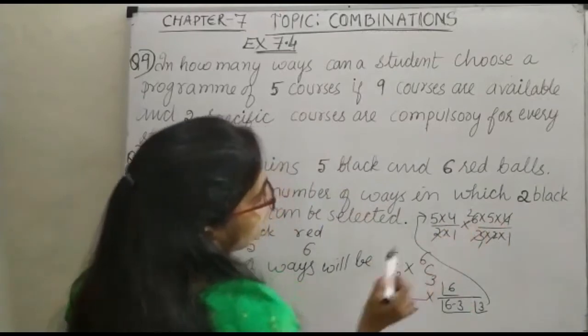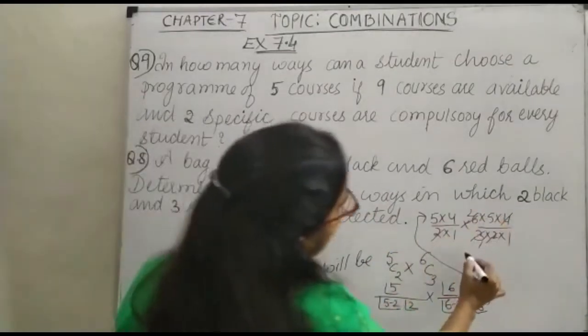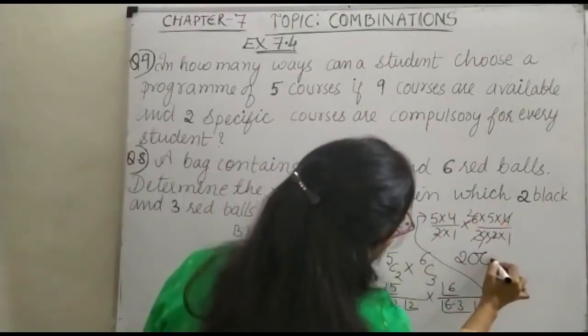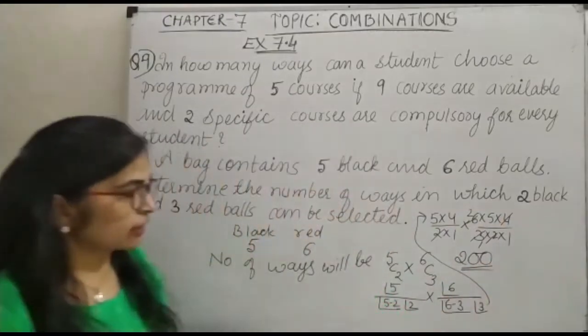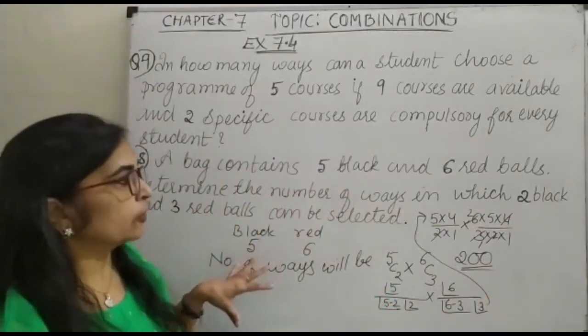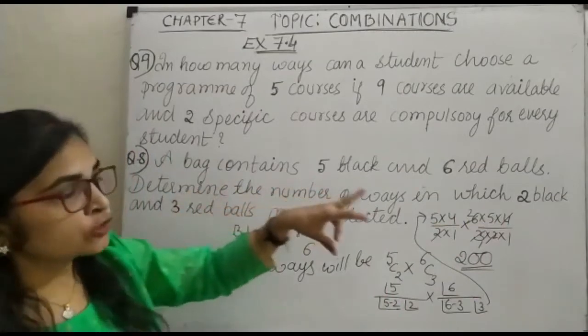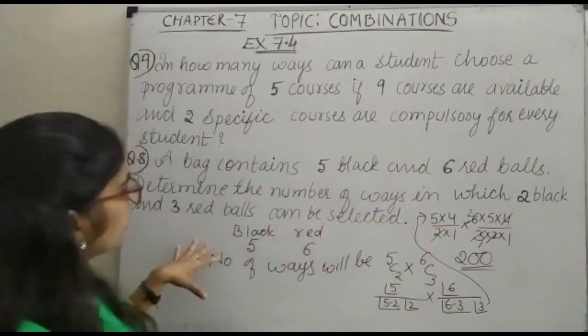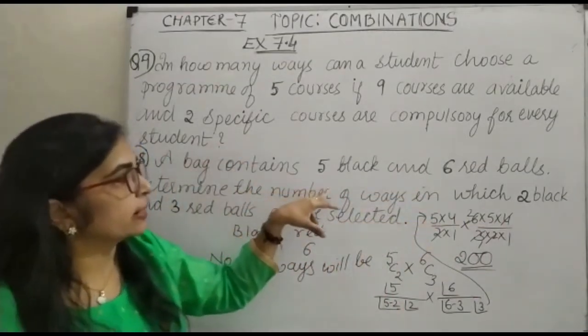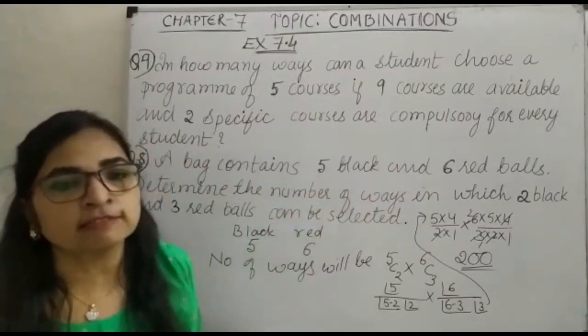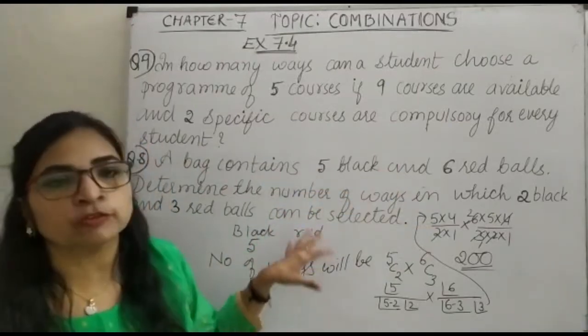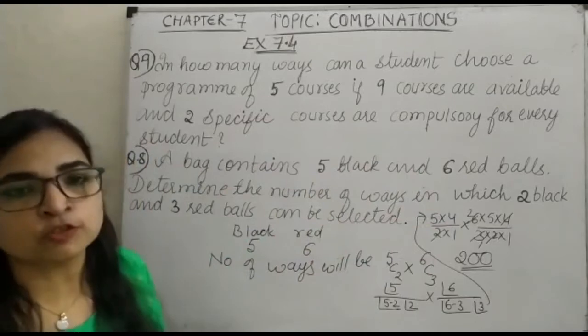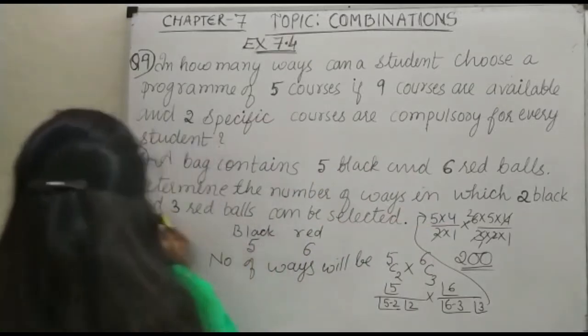So 5 fours are 20, 20 twos are 40, and 40 into 5, this will be 200. So this is how you can work out for the selection of 2 black balls and 3 red balls from a bag which contains 5 black and 6 red balls. So this is the number of ways of selection. How many is it? 200. Now moving on to question number 9.